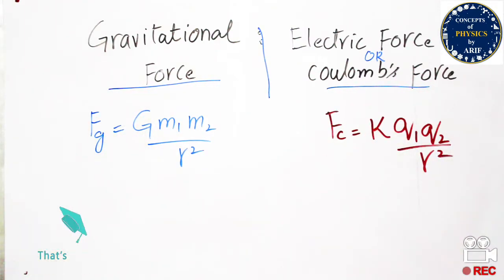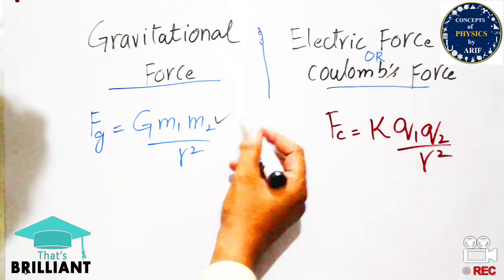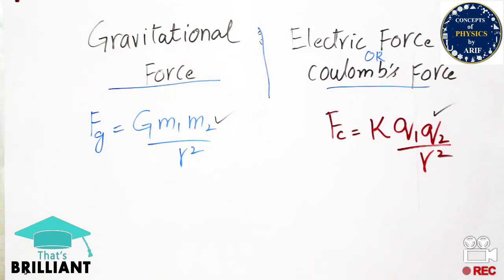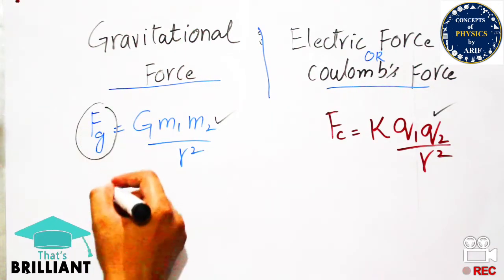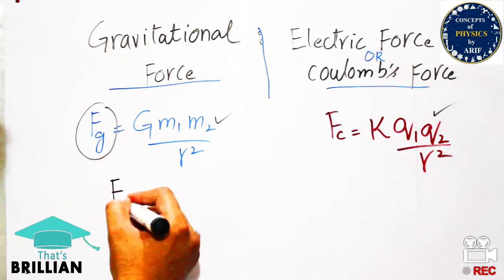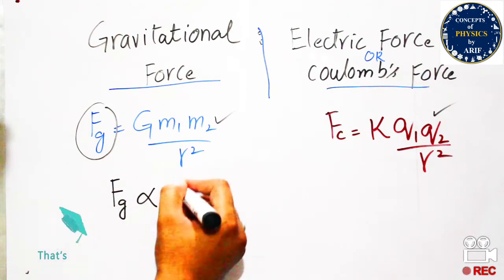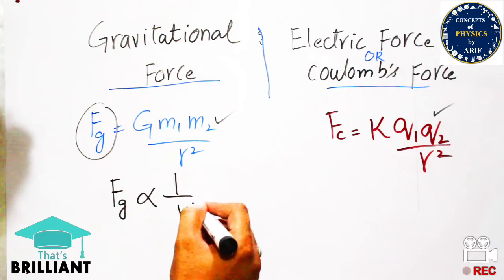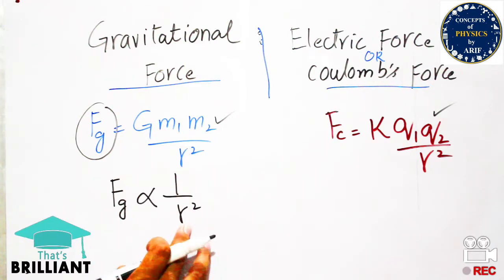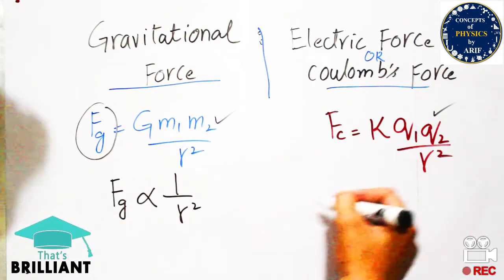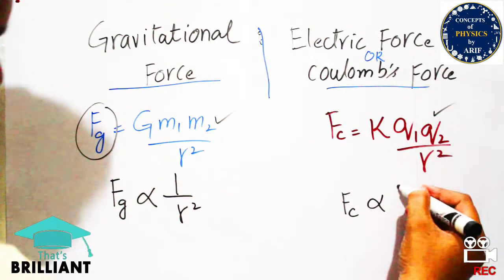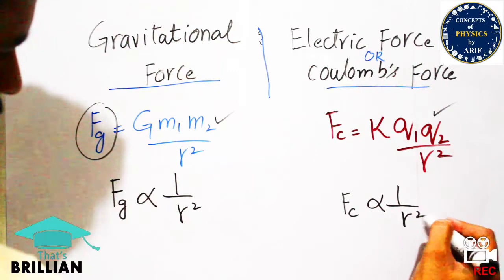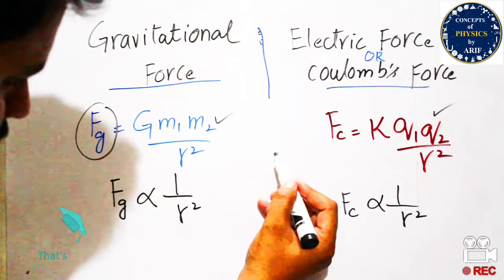As you have seen both formulas, the gravitational force is inversely proportional to the square of the distance between two masses — Fg is inversely proportional to R². Similarly, the Coulomb force is also inversely proportional to the square of the distance between two charges Q1 and Q2.